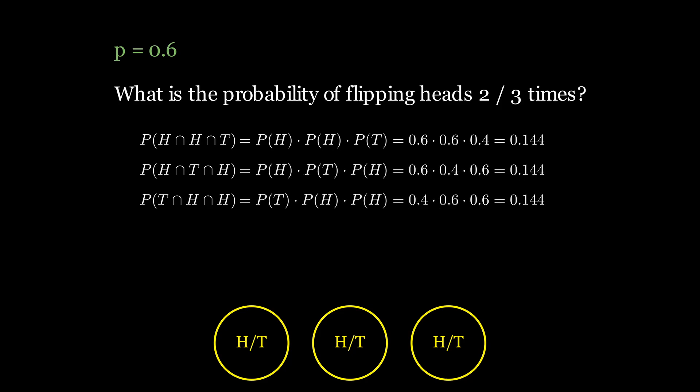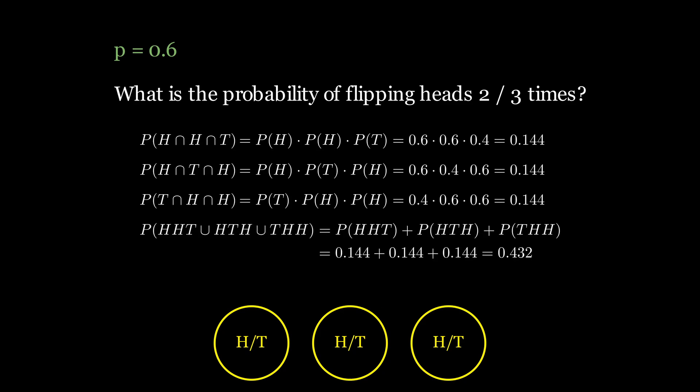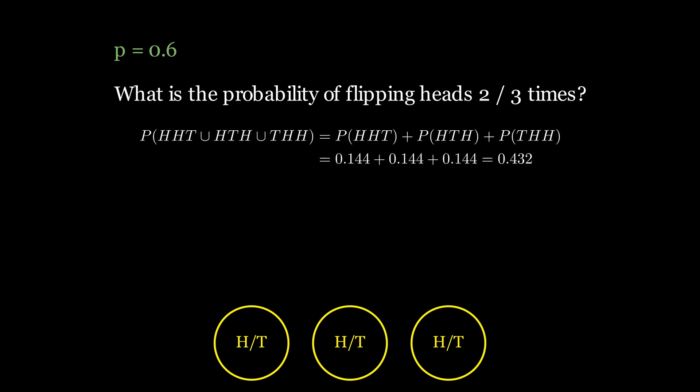We can sum these probabilities together, because the probability of the union of two events is equal to their sum minus the intersection of the events. And you cannot flip heads, tails, and then heads, and heads simultaneously. This gives us the probability of getting two out of three heads.